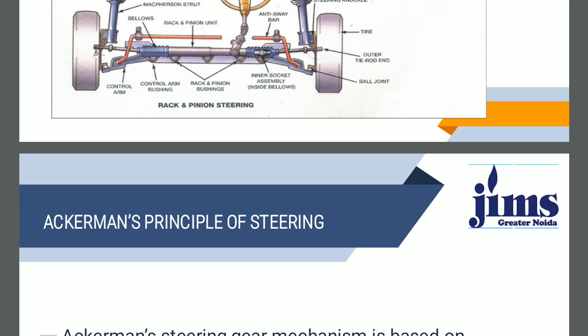The Ackerman steering mechanism has turning pairs and is thus preferred over the Davis mechanism. But here also there is a drawback: it fulfills the fundamental equation of correct steering only at the middle and at two extreme positions, and not for all directions. Since the Ackerman mechanism is preferred for automobile steering systems, it is discussed in detail.